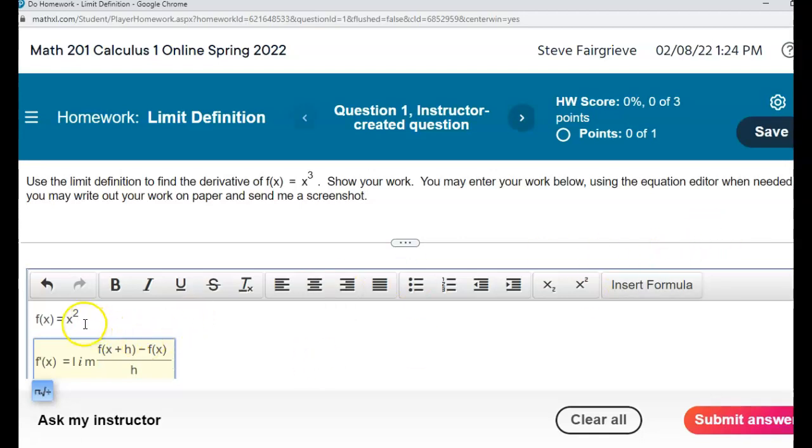So again, I'm just going to hit the backslash for the fraction bar, type in limit in front, and then plug in my x squared function. So that would be parentheses x plus h, and then shift 6 for exponent. Use my arrow key to come down, minus x squared and shift 6, all over h.